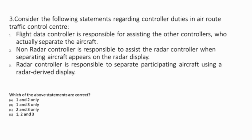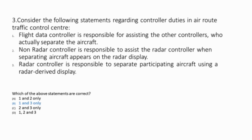Question 3: Consider the following statements regarding controller duties in air route traffic control center. First statement: the flight data controller is responsible for assisting the other controllers who actually separate the aircraft — this is correct. The flight data controller prepares flight progress strips which are used and updated by other controllers. Second statement: the non-radar controller is responsible to assist the radar controller when separating aircraft appears on the radar display — false. The non-radar controller's duty is to assist in conflict detection and update flight progress strips; when radar fails, the non-radar controller assumes responsibility for separation of non-radar traffic. Third statement: the radar controller is responsible to separate participating aircraft using a radar-derived display — correct. This question is based on duties and responsibilities of ATC positions including radar and procedural controllers.